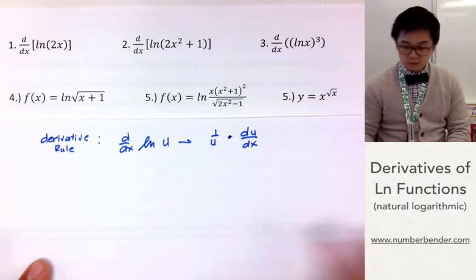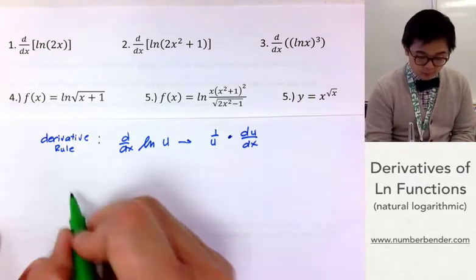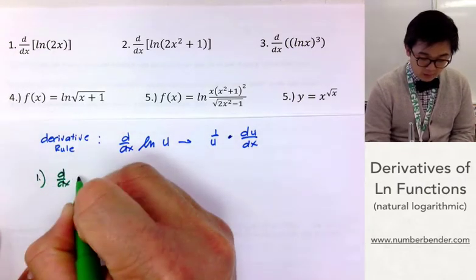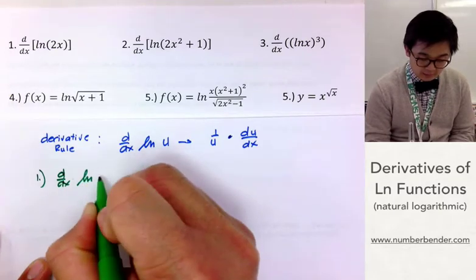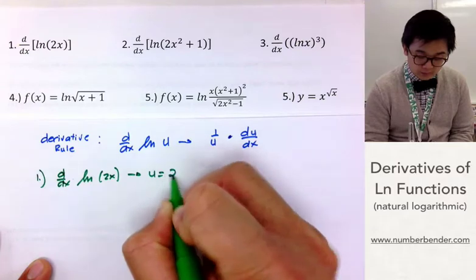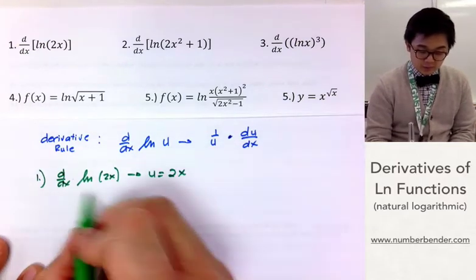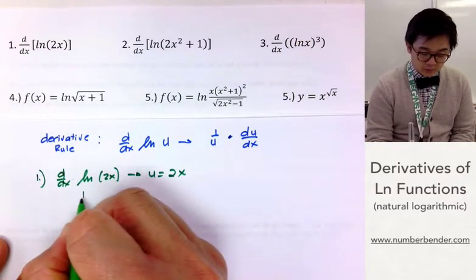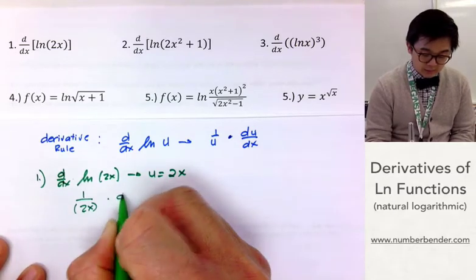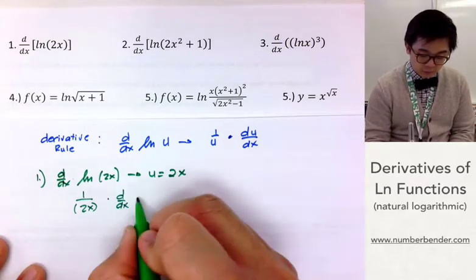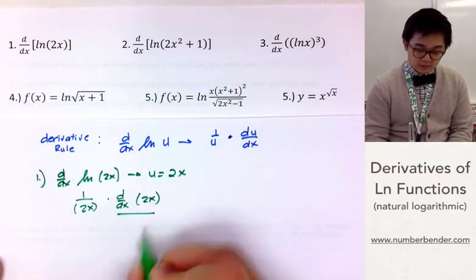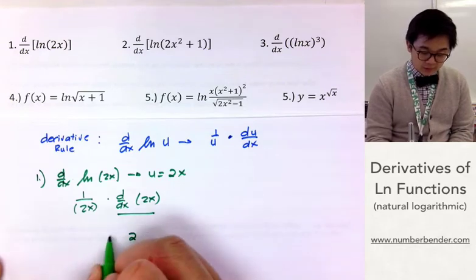Let's start with problem number 1. We need to find the derivative of ln(2x), where u is 2x. To find the derivative of that, we're simply going to use the formula 1 over u, which is 2x, times the derivative of u, which is 2x. We know that the derivative of 2x is simply 2.